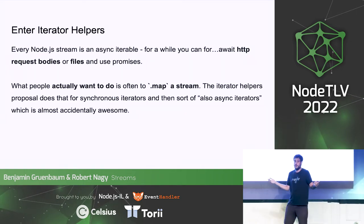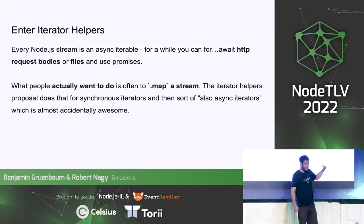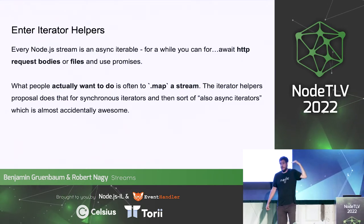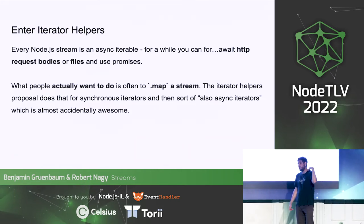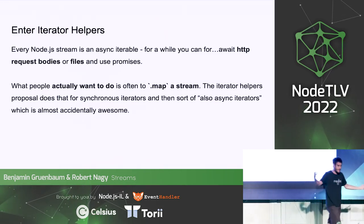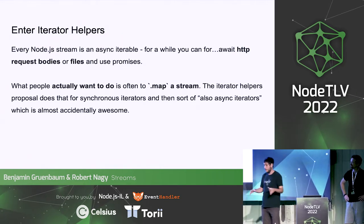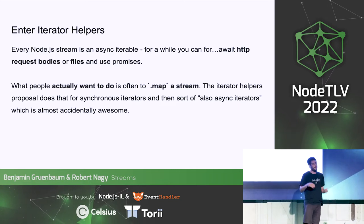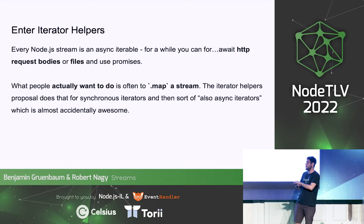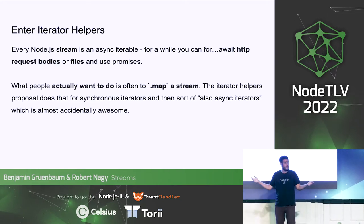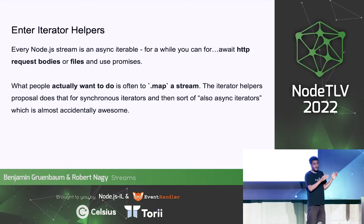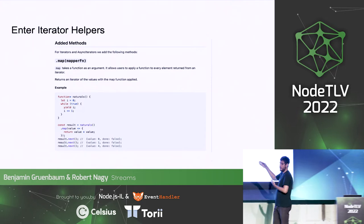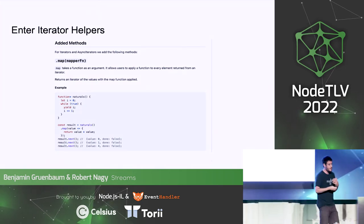In regular synchronous code we moved from for-loops to dot-map and dot-filter because it's easier, more readable, and maintainable. My hypothesis is that people just want to dot-map a stream — they don't want to pipe a transform stream and implement complicated stuff. The iterator helpers proposal is a TC39 ECMAScript proposal for adding all those methods to iterators and async iterators. The language is not aware of Node streams or web streams, but because streams are async iterable, we can take this proposal and apply it.